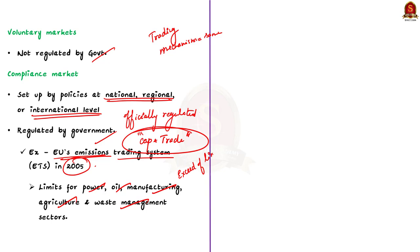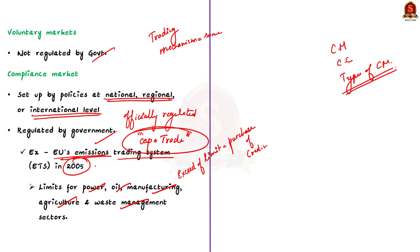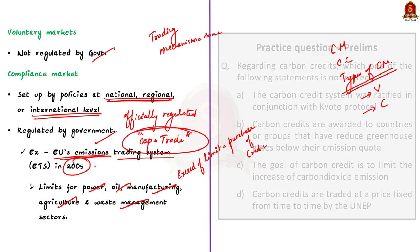In this discussion, we understood what is a carbon market, what is a carbon credit and how it is traded in a carbon market, and we ended our discussion by seeing the two types of carbon markets: voluntary markets and compliance markets. Now let us move on to the next article discussion.